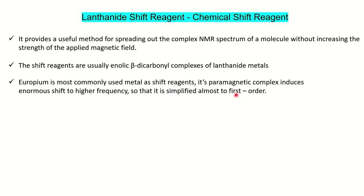You might have studied about first order and second order spectra. First order means you can distinguish the multiplicity and identify the peaks easily, including their coupling. Second order is where the peaks are coupled and merged together and you are not able to identify how many protons or different kinds of protons are there. It is called second order spectrum — for example, the AB spectrum, where A and B are close in the alphabet. For first order we call it AX spectrum, where A and X are far apart in the alphabet, and similarly the peaks will be far apart.